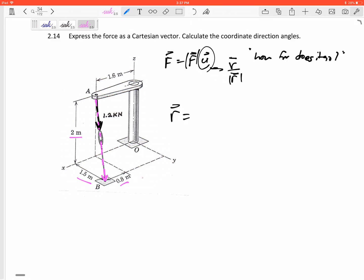So here r would be: how far does it go in x? It starts right up here and ends right here. It goes positive 0.8 in the i. How far does it go in the y? It comes over 1.5 in the j. How far does it go in the k direction? Here's my z axis. It's going down 2, so minus 2 in the k.